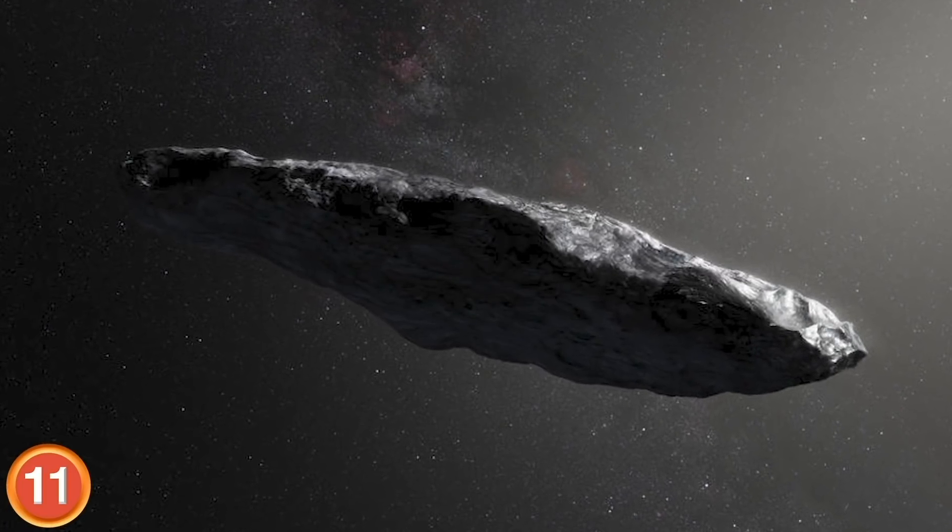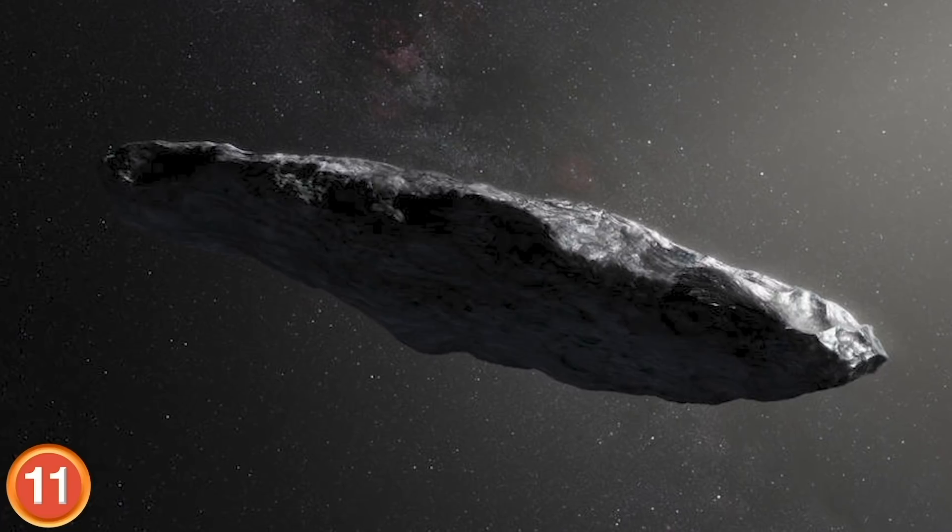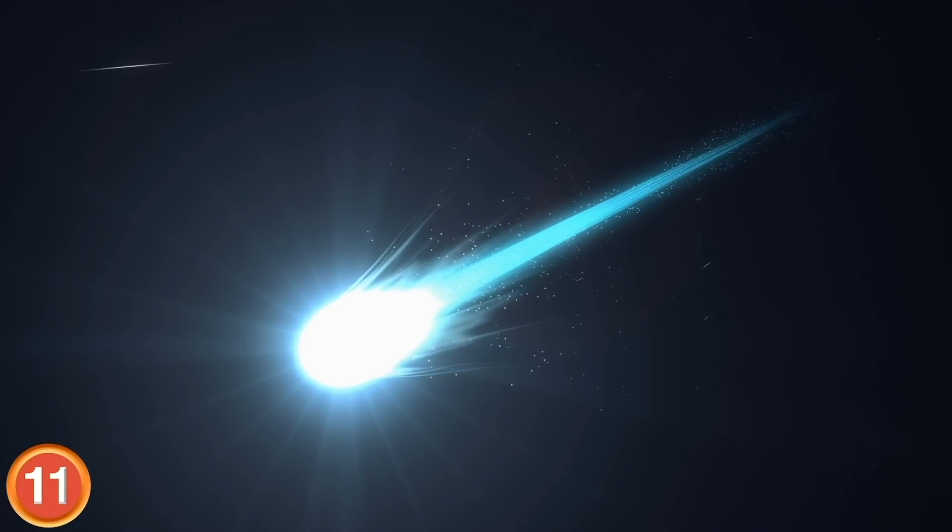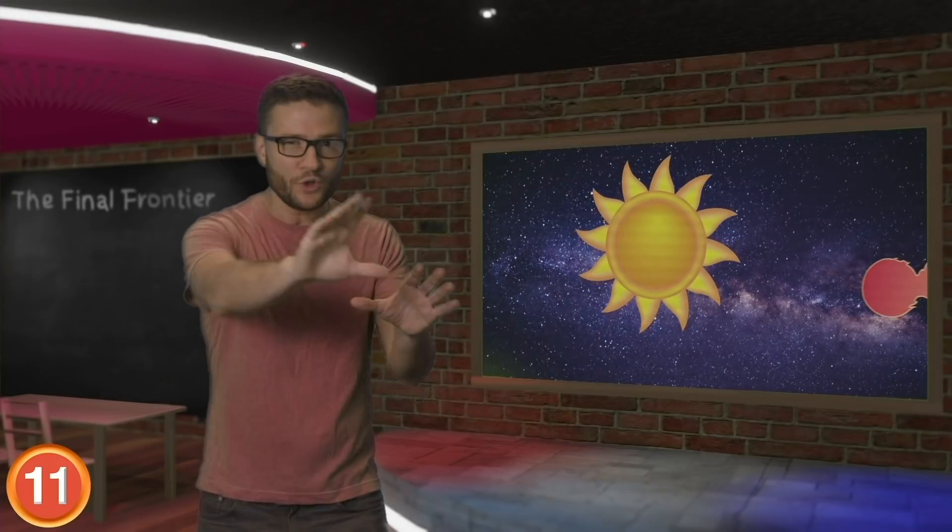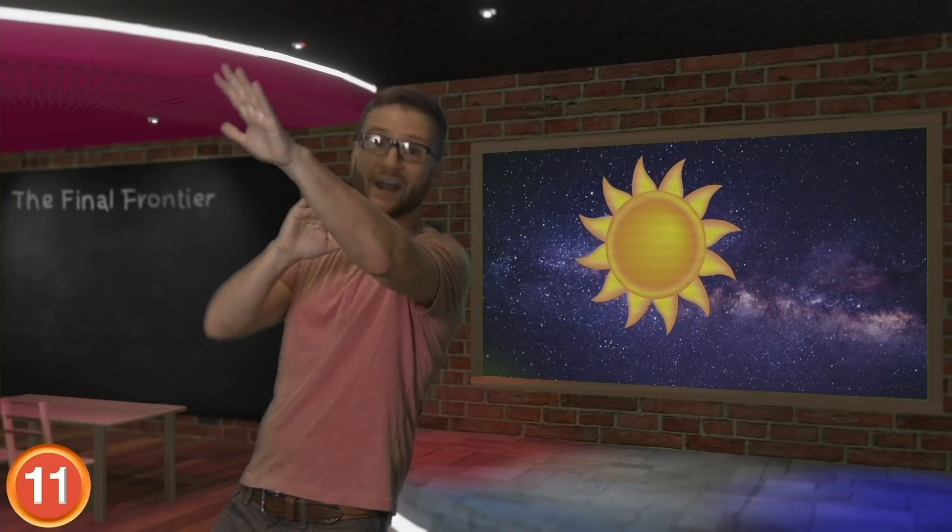What makes Oumuamua baffling is that it didn't just cruise through our solar system on its road trip across the galaxy, it flew close to the sun and then suddenly accelerated and blew out of the solar system.